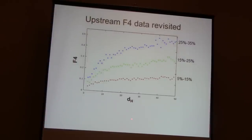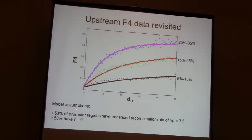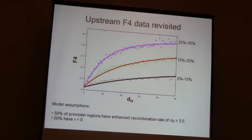With that data in hand, let's revisit what we saw before and try to fit a model. A model in which all regions 500 bases upstream have exactly the same recombination rate won't fit the data. But the next simplest model does: one in which 50% of all promoter regions have a constant enhanced recombination rate of about 3.5 times the mutation rate, and the remaining 50% have zero. The curves don't converge to zero at zero distance, due to the small fraction of F4 caused by recurrent mutations.